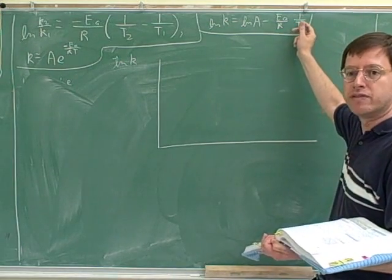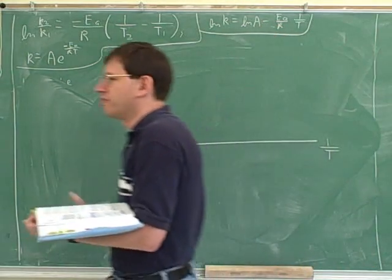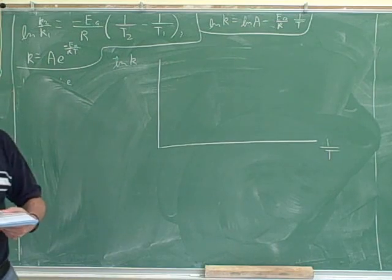Not the temperature, but 1 over the temperature. And now how do we interpret this? What would be the y-intercept of this equation?